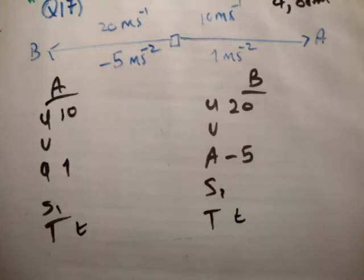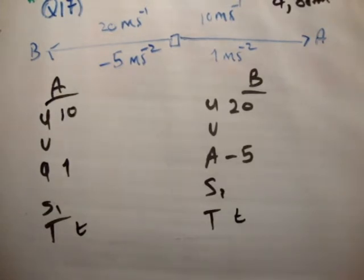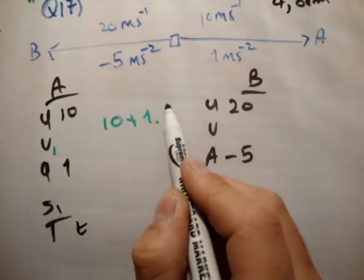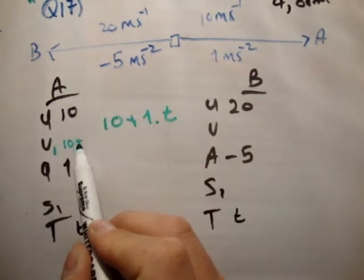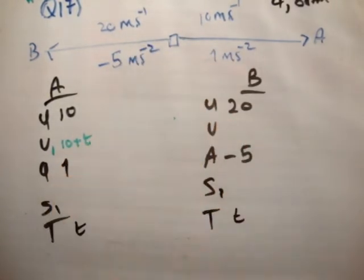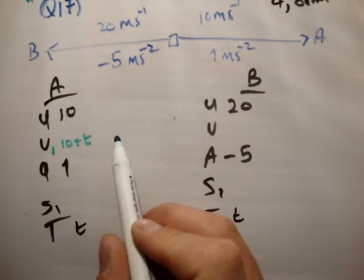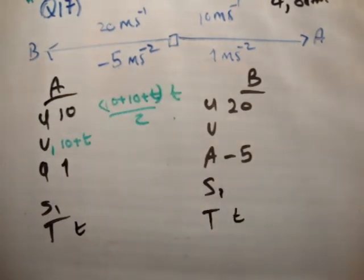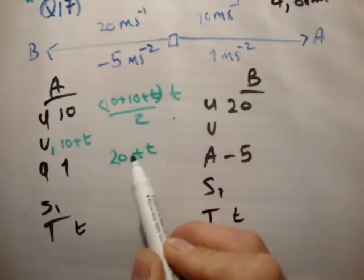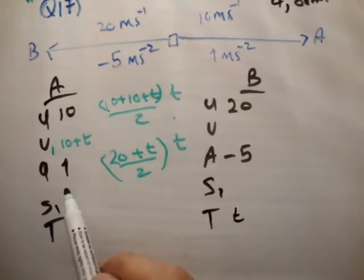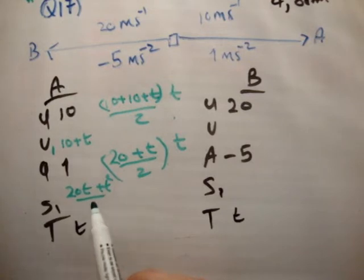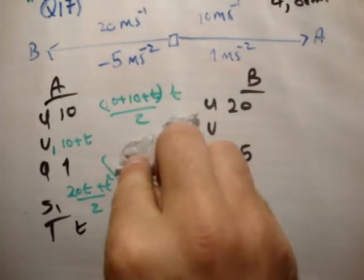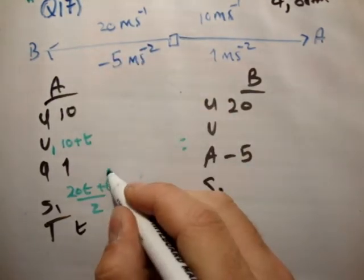So, what we'll do is, we'll use our usual UVAST formulae. V is equal to U plus AT. So, V1 is equal to U, which is 10 plus 1 times T. So, that is 10 plus T. And S is equal to U plus V over 2 times T. So, that's 10 plus T over 2 times T. So, that's 20T plus T squared over 2. That's pretty straightforward. Note that square.